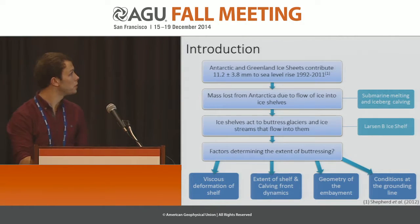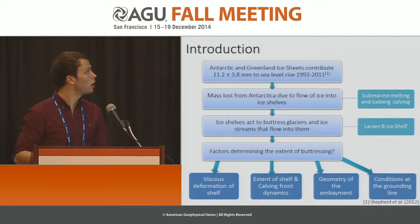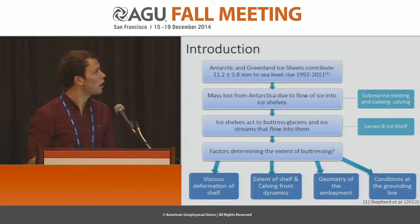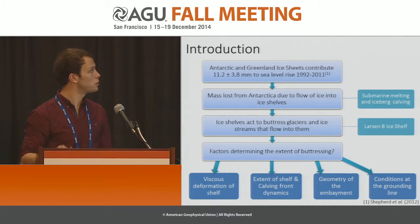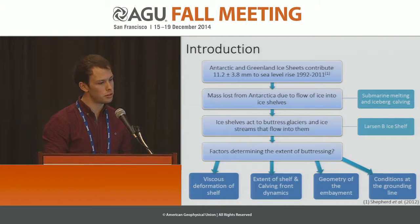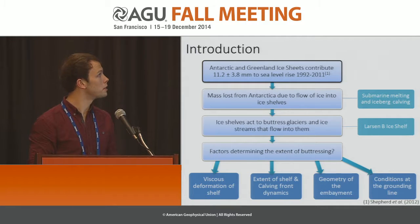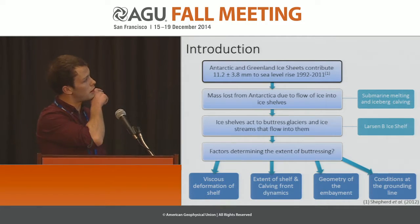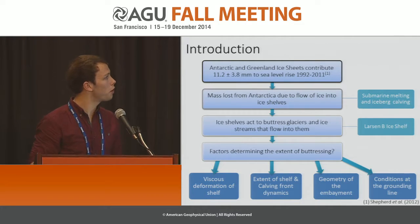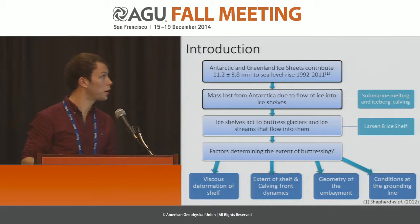As an initial motivation, sea level rise is an ever-increasing threat to many low-lying countries throughout the world. The ice sheets of Greenland and Antarctica are contributing factors to this, and between 1992 and 2011, the ice sheets of Antarctica and Greenland lost approximately 11 millimetres equivalent to sea level rise. This mass loss from Antarctica is mainly driven by the flow of ice off the continent into the ice shelves, where it is ultimately lost by submarine melting and iceberg calving.